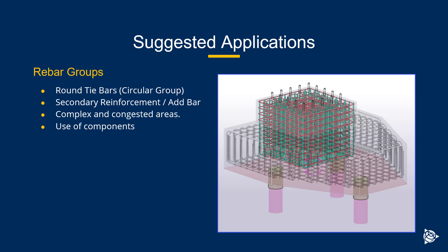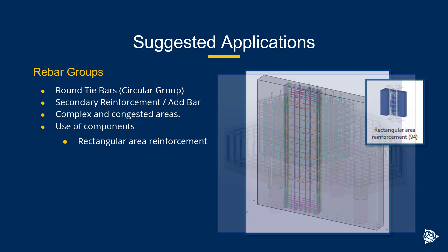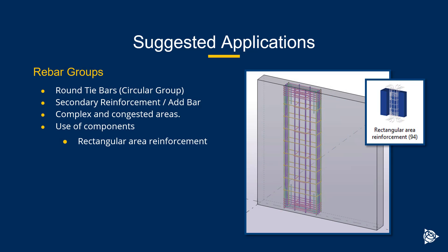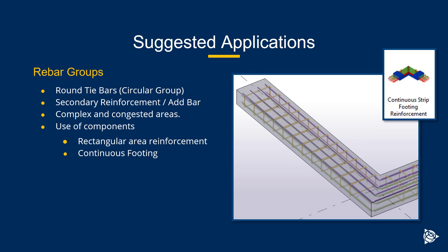Naturally, if you're using any components in your detailing — which you should be if you can manage it — such as the rectangular area reinforcement to put a cage inside of a wall, or even the continuous strip footing reinforcement, those areas most applications use groups. That strip footing tool is quite handy, especially for corner bar. Just remember, it's an 80-20 rule — sometimes you'll have to take that component a little further than the dialog box allows, so get familiar with rebar groups inside the properties pane.